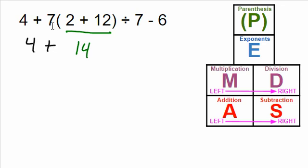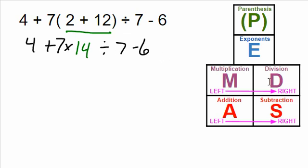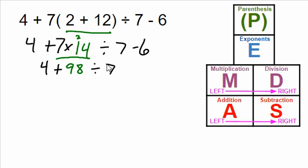So 4 plus... now we have the 7 next to the parentheses, so what does that mean? That means we're going to multiply — I can put the parentheses around this or use a multiplication symbol. Divided by 7 minus 6. So now, what is our next step? We don't have any parentheses or exponents, but we have both multiplication and division. Which one happens on the left? Well, 7 times 14 happens on the left, so we do that one first. 7 times 4 is 28, carry the 2, 7 times 1 is 7, plus 2 is 9 — so 7 times 14 is 98. I'm being careful not to rewrite what I already solved.